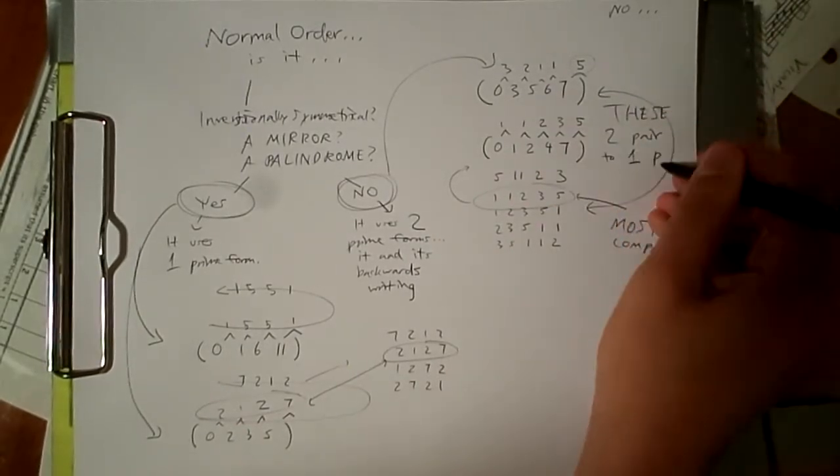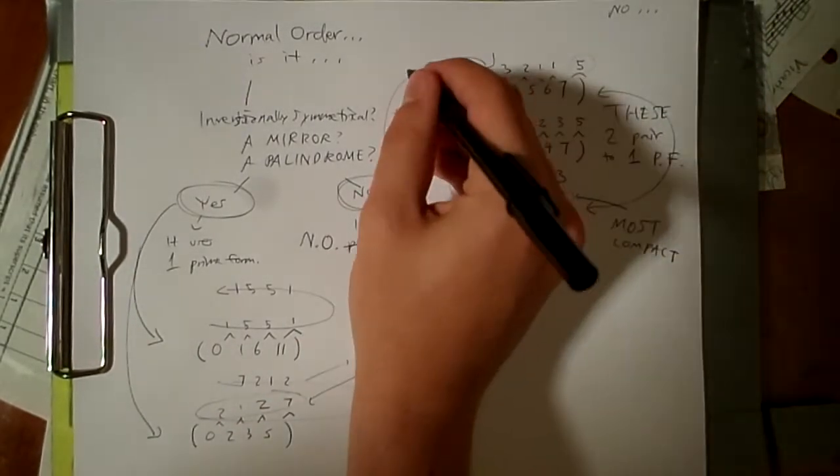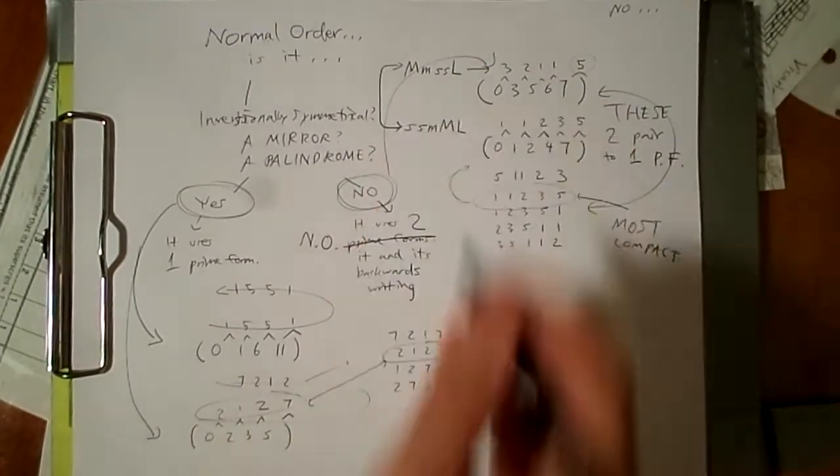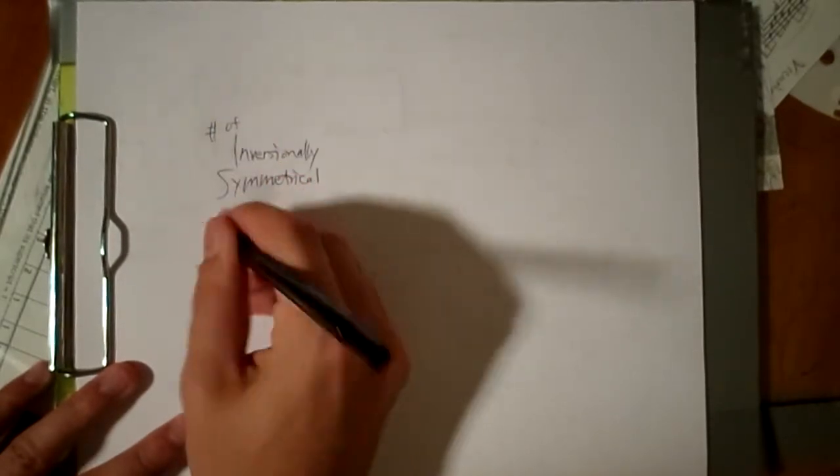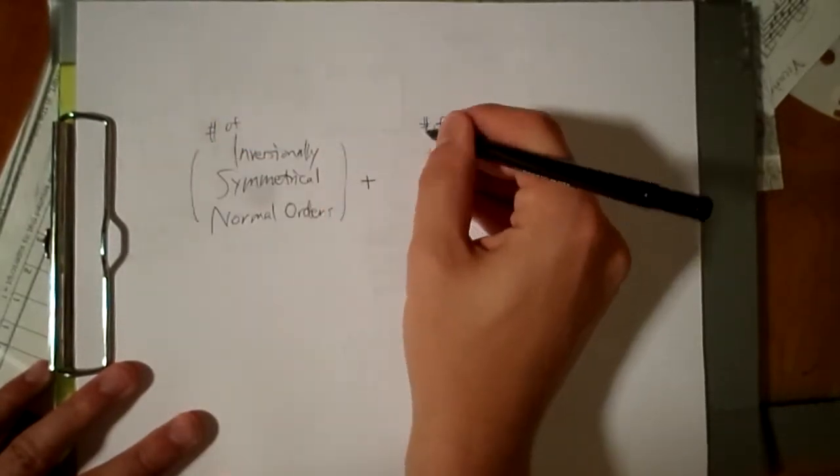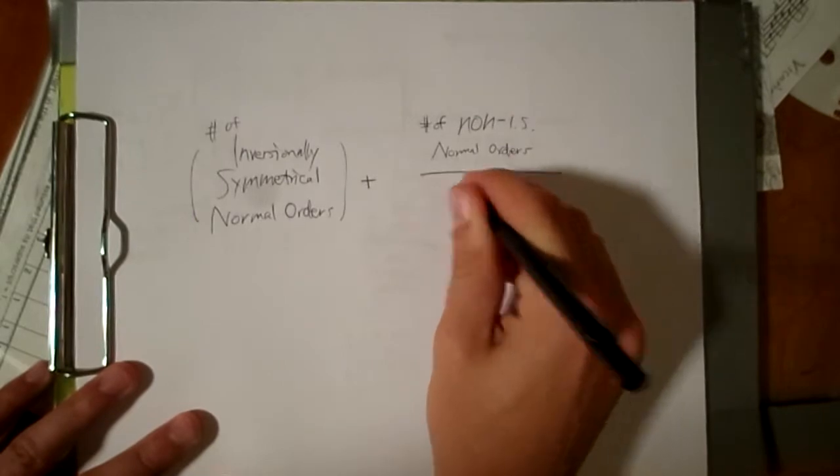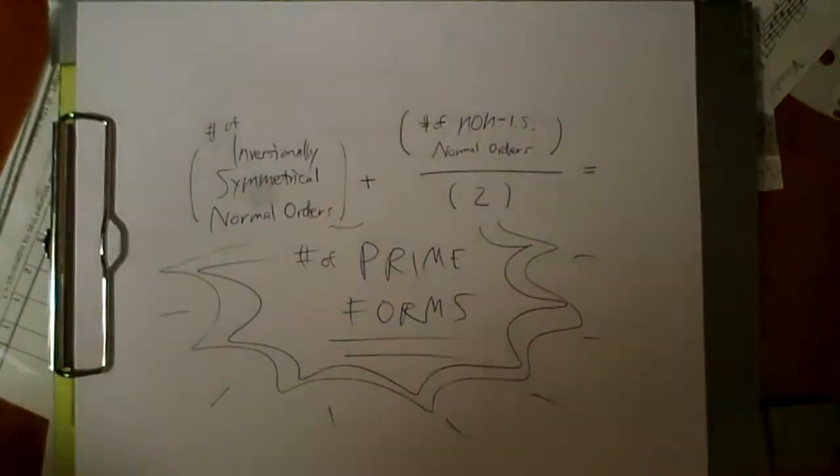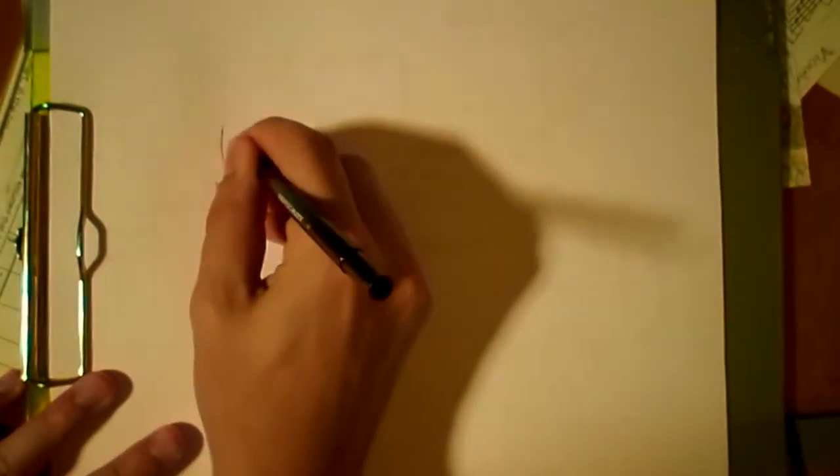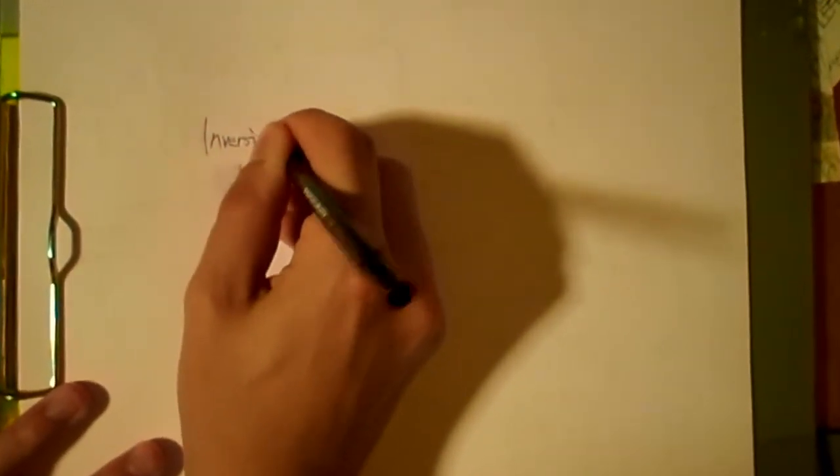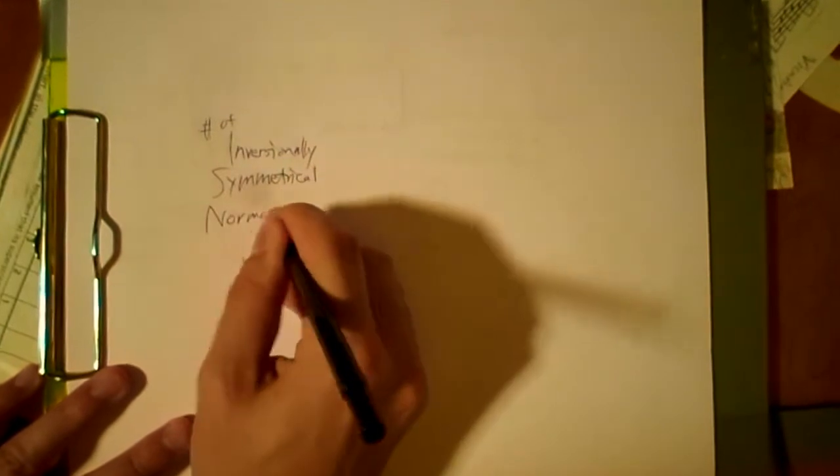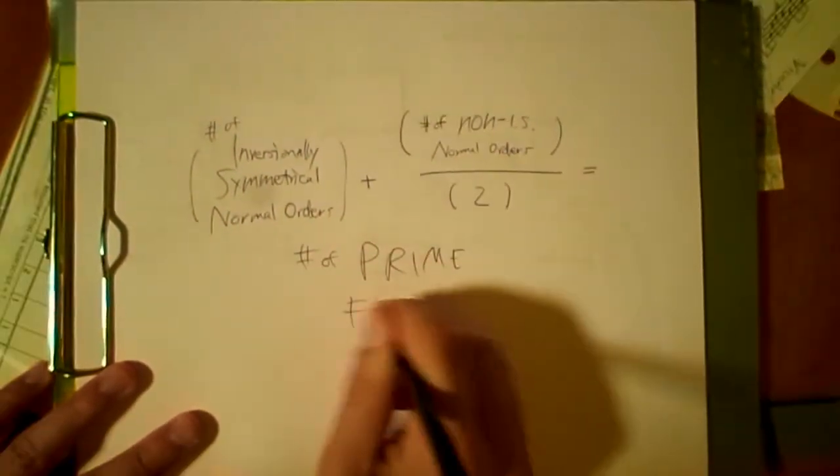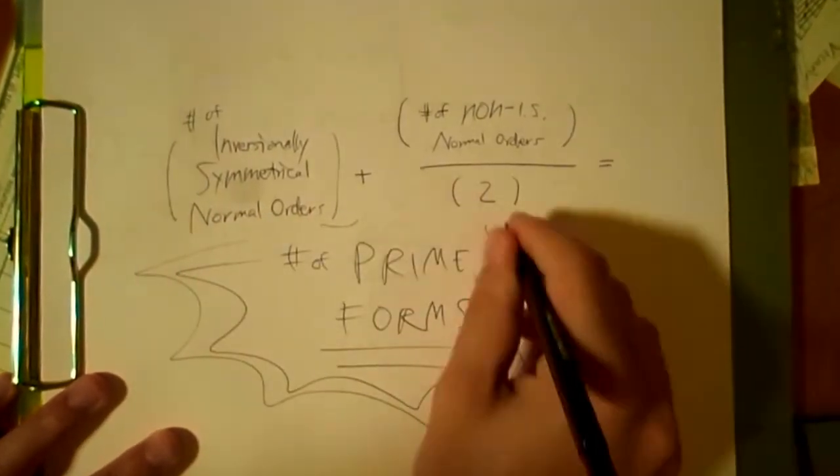This means that normal orders for a scalar class set can be divided into two types: those that are inversionally symmetrical, which simply each count as a prime form, and those that are not inversionally symmetrical. The second kind is divided by two, and added to the first kind to get the total number of prime forms. To write that out again, the number of inversionally symmetrical normal orders plus the number of non-inversionally symmetrical normal orders divided by two is equal to the number of prime forms.